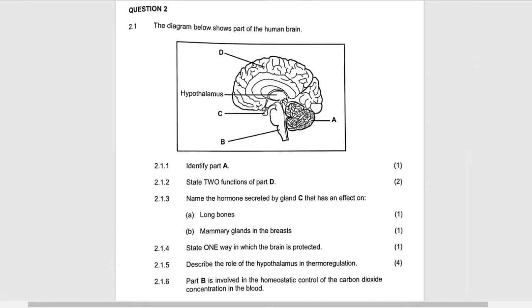Part A is cerebellum. Part B is medulla oblongata. Part C is the pituitary gland, or hypophysis. Part D is hypothalamus — sorry, this is hypothalamus. Part D is cerebrum.